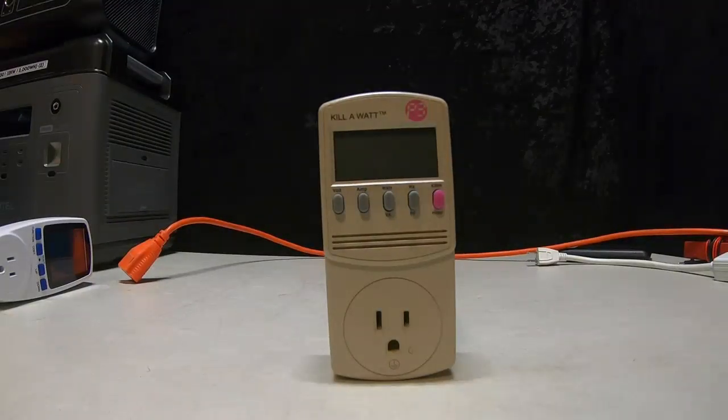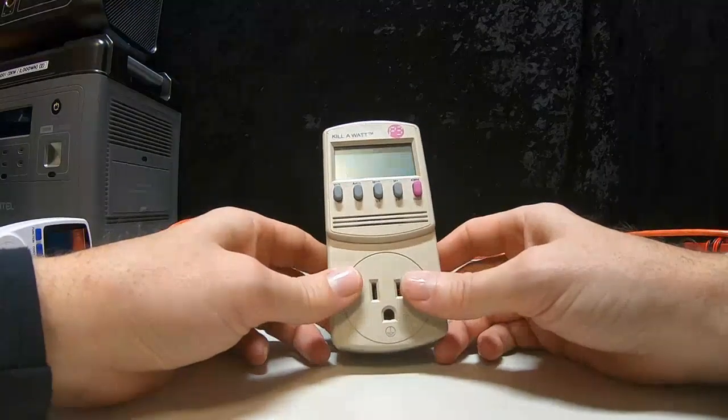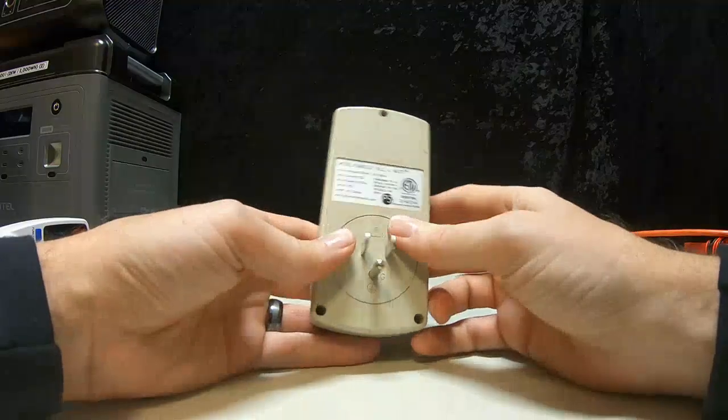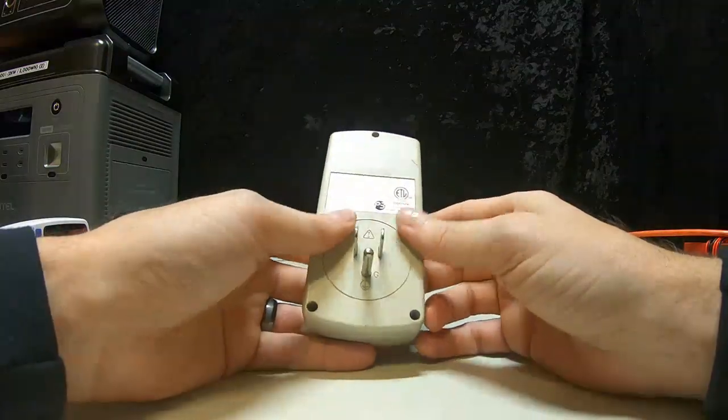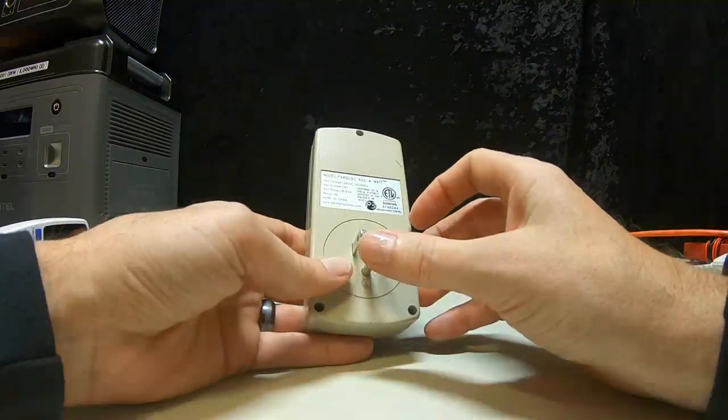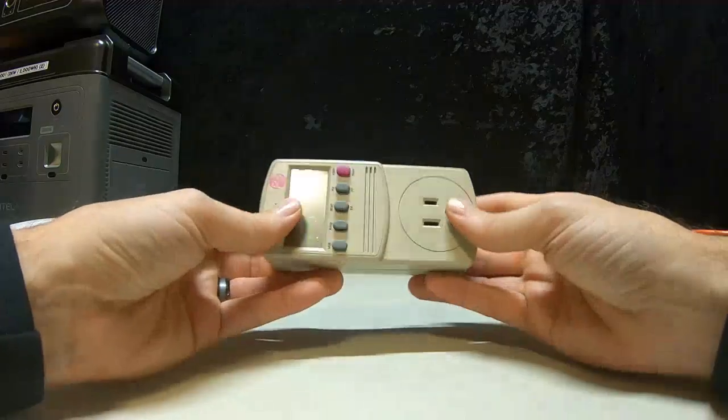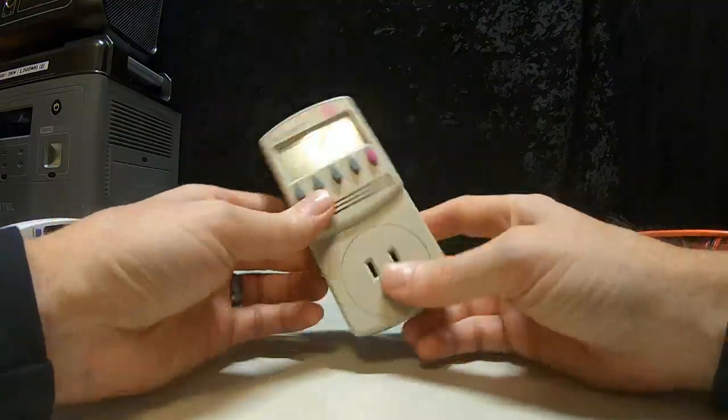Hey guys, back for another one. This is the P3 Kill-a-Watt meter, the 4400.01 model. That's the old model. I've had this probably, boy, it's got to be good 15 years.